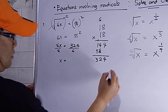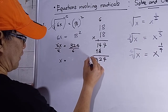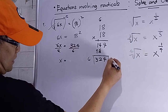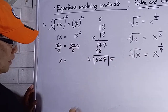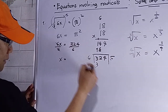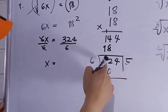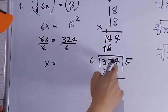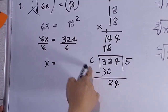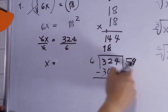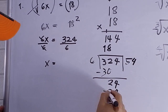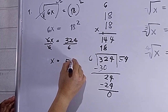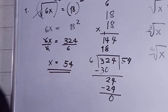Dividing 324 by 6: 6 goes into 32 five times giving 30, remainder 2; bring down 4 to get 24; 24 divided by 6 is 4. So x equals 54.